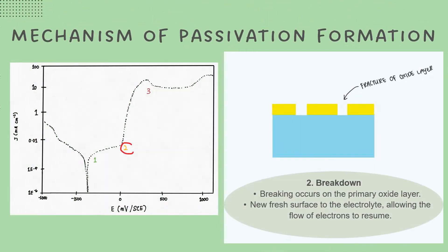As a result, the current will exhibit a downward trend. Breakdown is the second stage of passivation formation. After a constant supply of electric potential, breaking occurs on the initial oxide layer, exposing a new fresh surface to the electrolyte and allowing electron flow. As a result, the current will increase again.